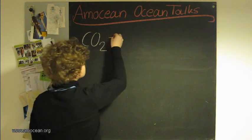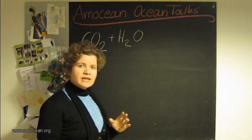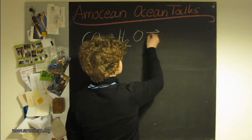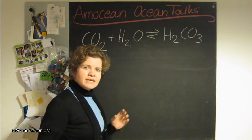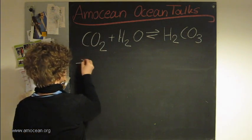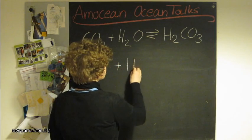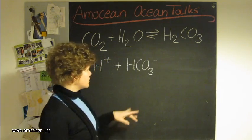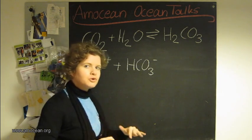Carbon dioxide plus water forms a weak acid which is called carbonic acid. Carbonic acid in water is not stable — it will dissociate into one proton and one bicarbonate ion. Carbonic acid, depending on the conditions, is also not stable but will further dissociate.